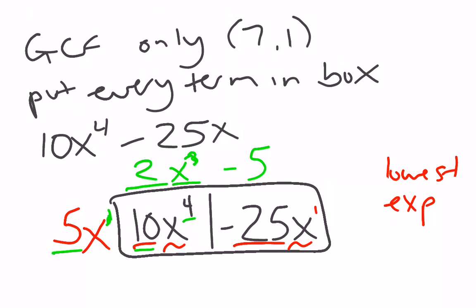So my answer would be 5x times 2x cubed minus 5. And if I check and distribute back out, 5x times 2x to the 3rd is 10x to the 4th, 5x times negative 5 is negative 25x. So I know I've gotten it right.